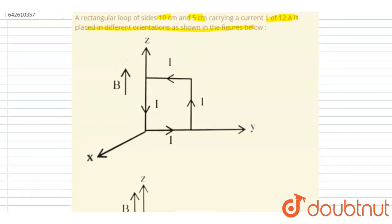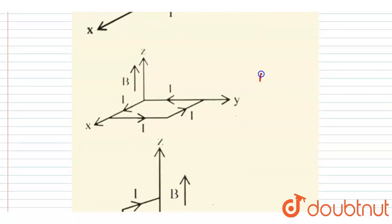If you see here the area vector of the loop, if you curl the fingers in the direction of current flowing, you will get the area vector of this along the x-axis. So let's say area vector A1. If I say area vector of two, this is along...